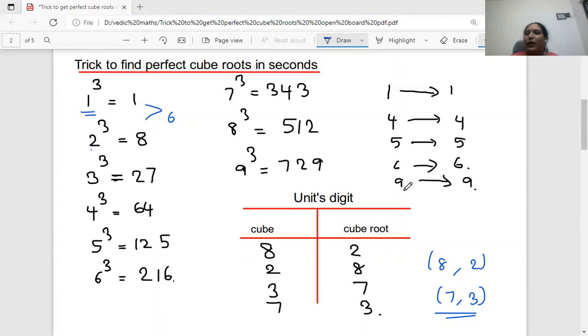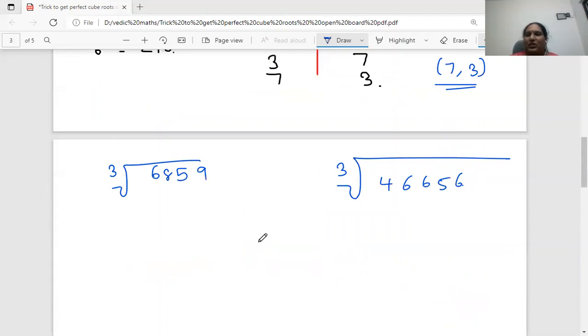So these numbers 1, 4, 5, 6, 9, if you find those cubes, you will get the same numbers. If you find the cube roots also, the numbers ending with this, you will get the same numbers. But for 8 and 2, they come in combinations. For 8 you should get 2, and for 3 you should get 7. So that's how they come. So that much information is sufficient to find out the cube roots.